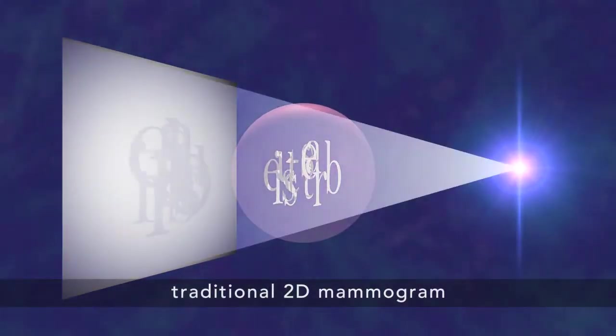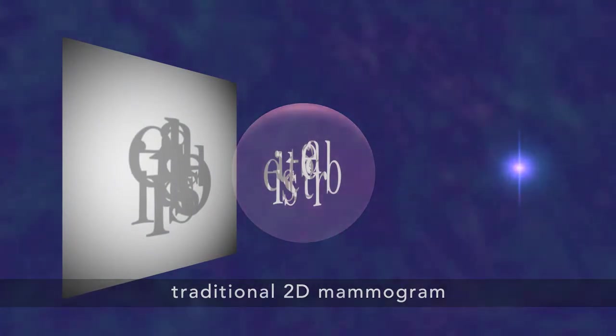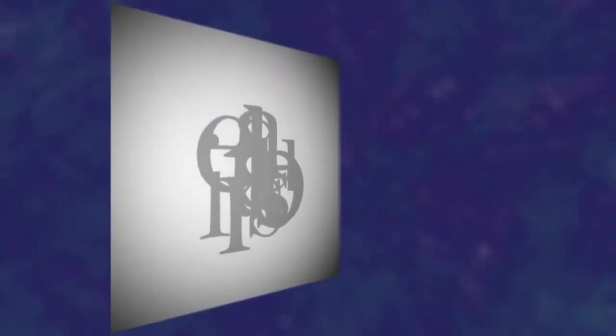Why is this a good thing? Well, a traditional 2D mammogram shows all the breast tissue at a glance. That means one feature can hide in the shadow of another.